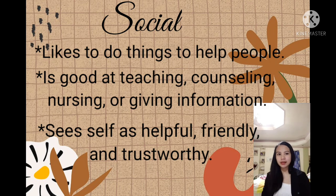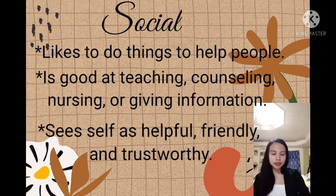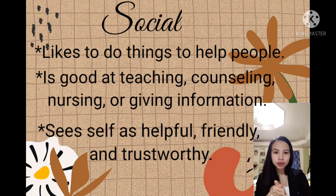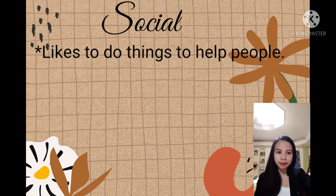Next is social: likes to do things to help people. Good at teaching, counseling, nursing, or giving information. They see themselves as helpful, friendly, and trustworthy. We psychology students fall into this category of social, along with those in education, nursing, or careers that require good interpersonal skills. This is the type of career that requires interpersonal skill. If those under realistic are good with machines, socials are good with people — they are compassionate.